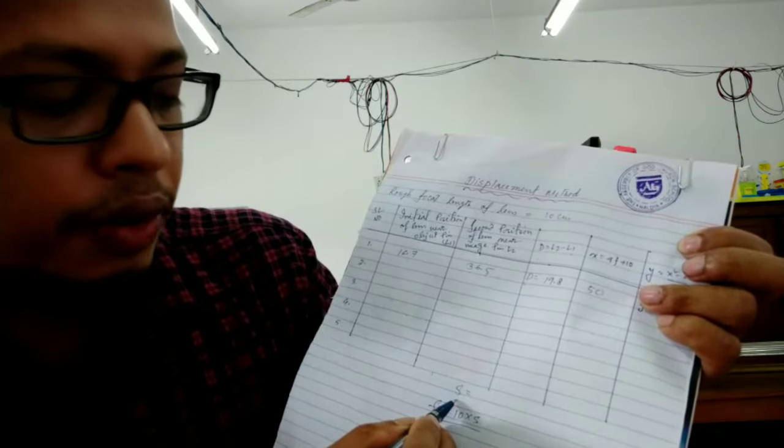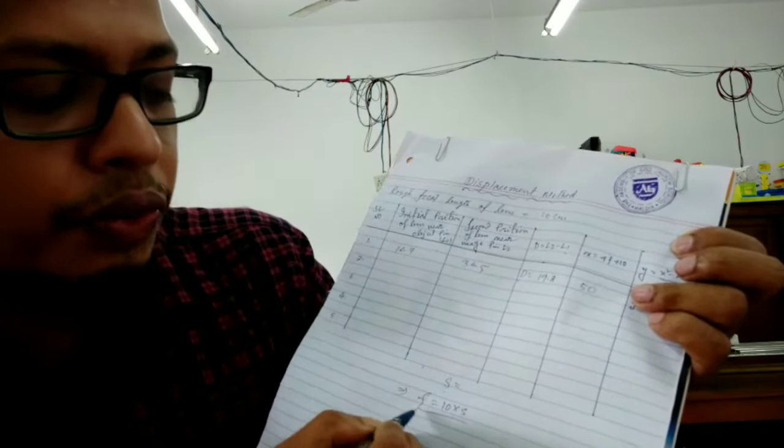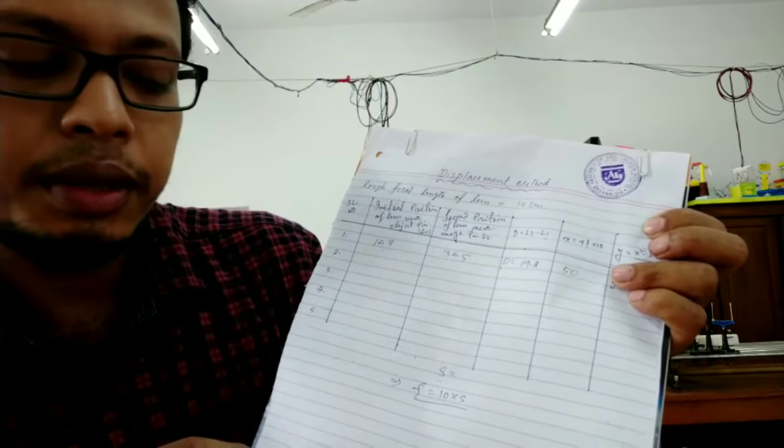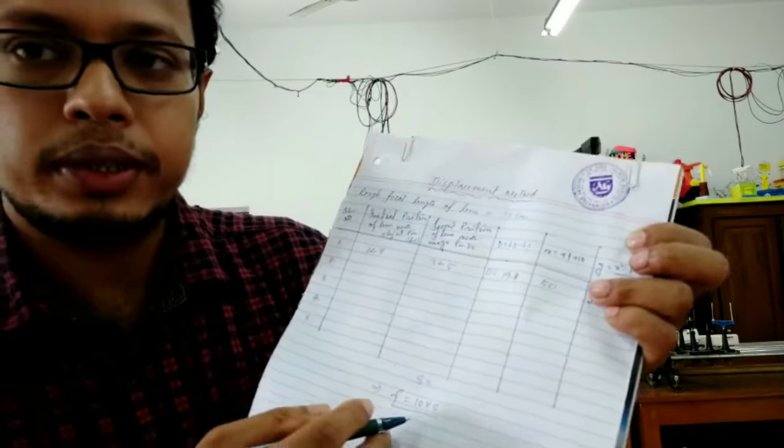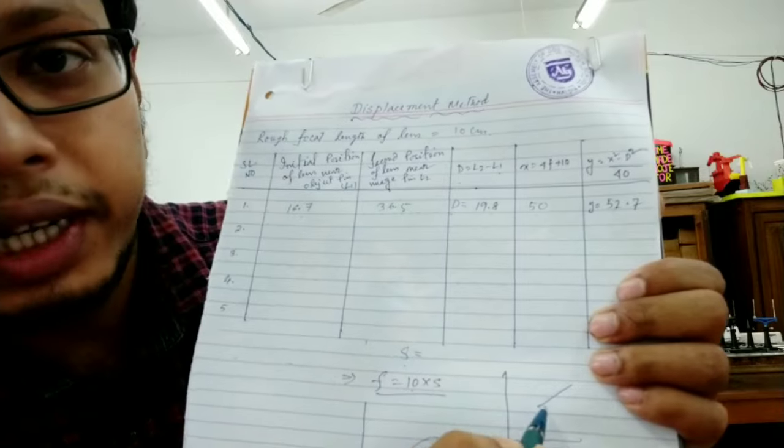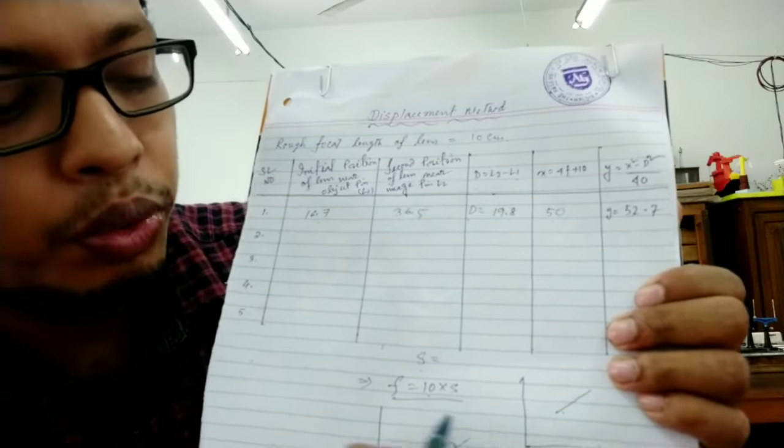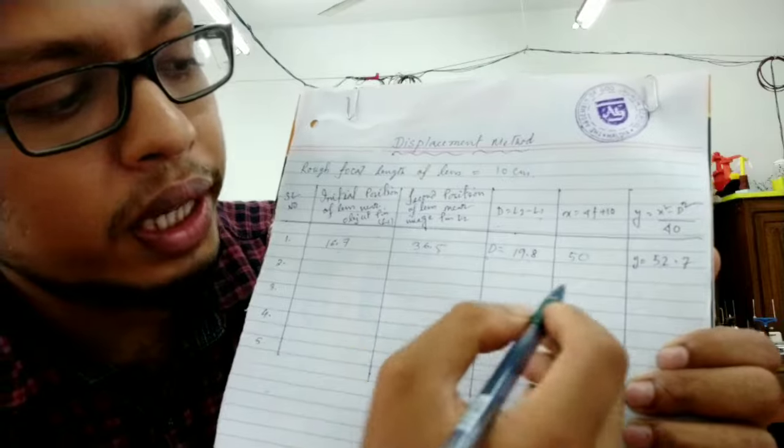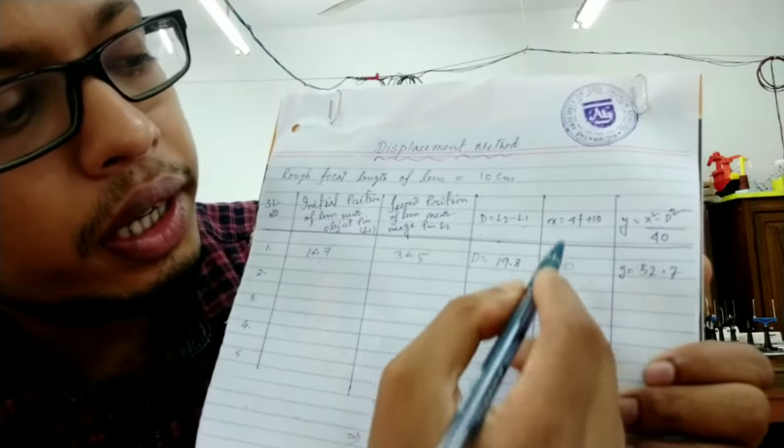So slope you will find from the graph. Now you can find the focal length of the convex lens by using the formula 10 into S. The graph will be a straight line. From here you will find the slope and put it in the equation.